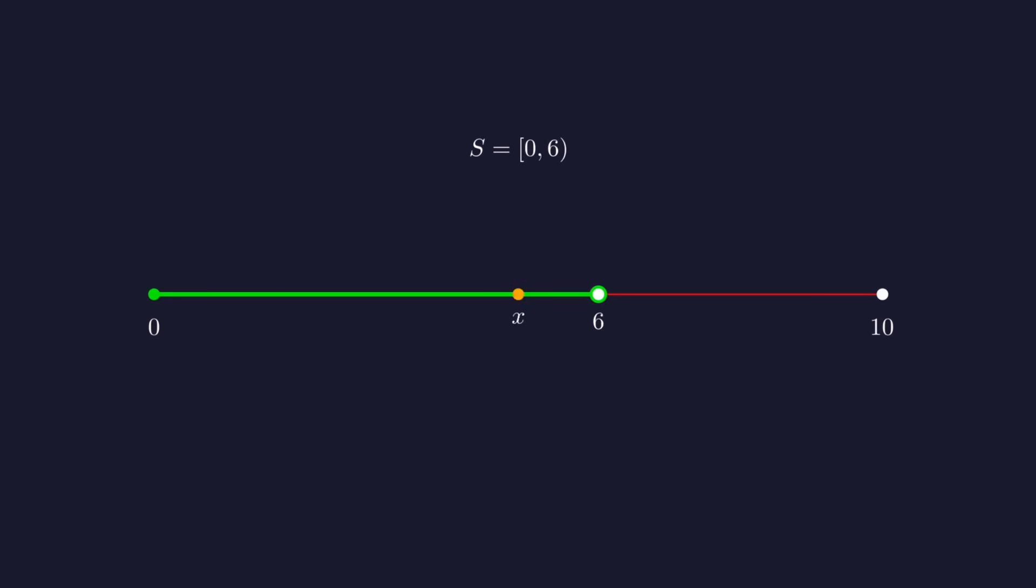Now pick any element x of s which is necessarily less than 6. So the interval from 0 to x is in s and we can extend this interval by moving the right endpoint halfway from x to 6.